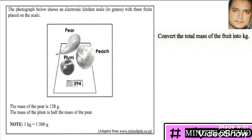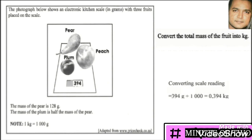The question asks us to convert the total mass of the fruit into kg. We've already noted that 394 grams is the total amount of the fruit, so we need to convert this to kg. Taking 394 grams, we divide by 1000 and we get 0.394 kg.